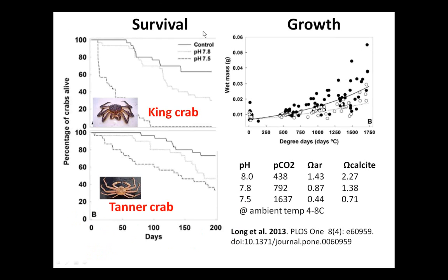Finally, the work on king crab and tanner crab looks at survivability and growth. In this case, there was definitely a negative effect of acidification on survival and growth under rather extreme and corrosive conditions at the highest pCO2 treatment. Remember, this is very cold water—four to eight degrees—for these species.